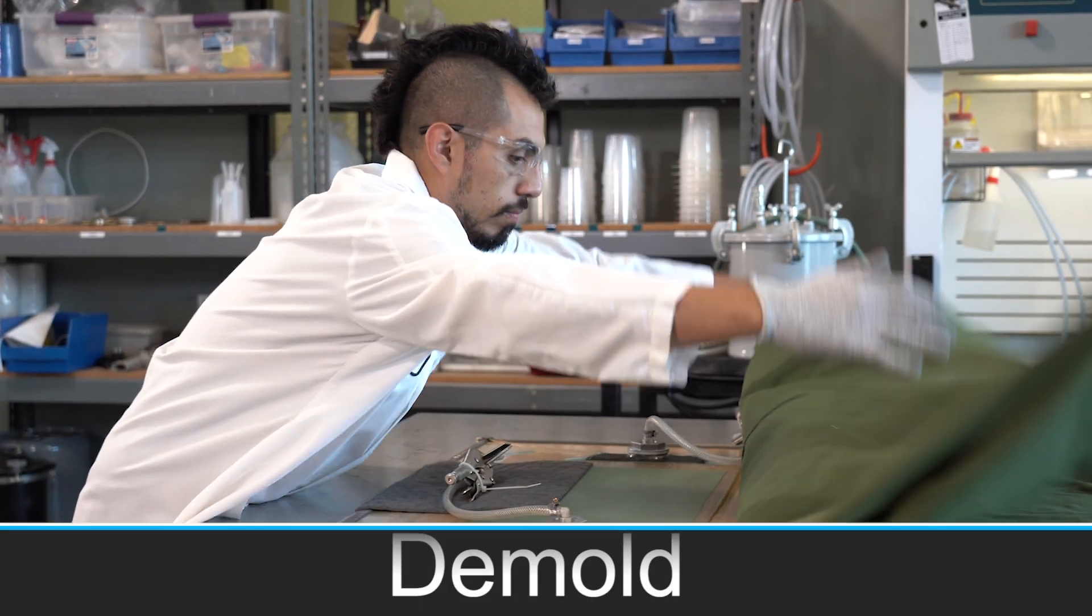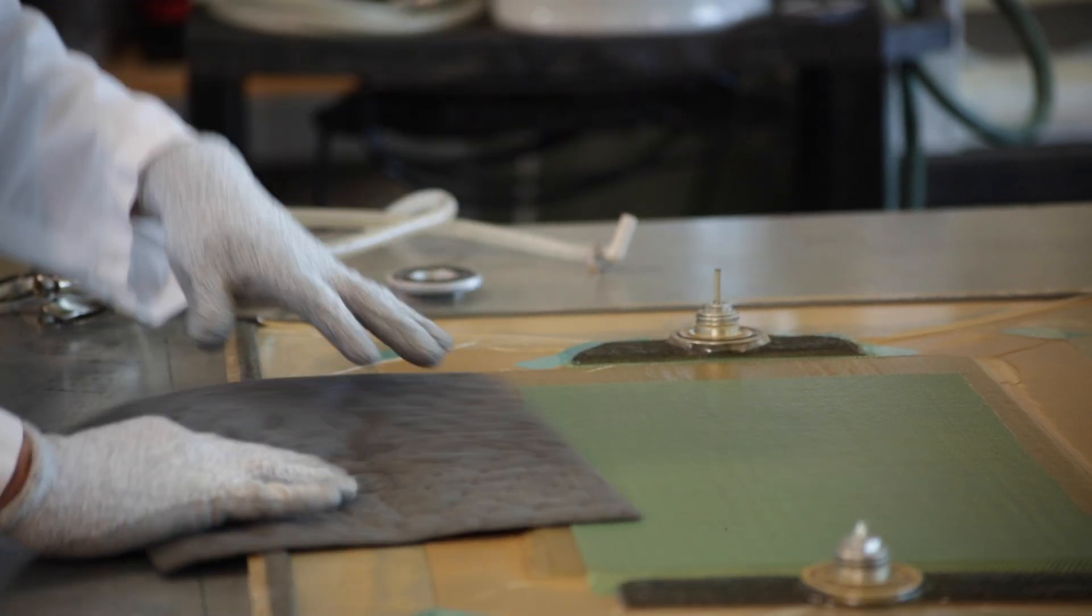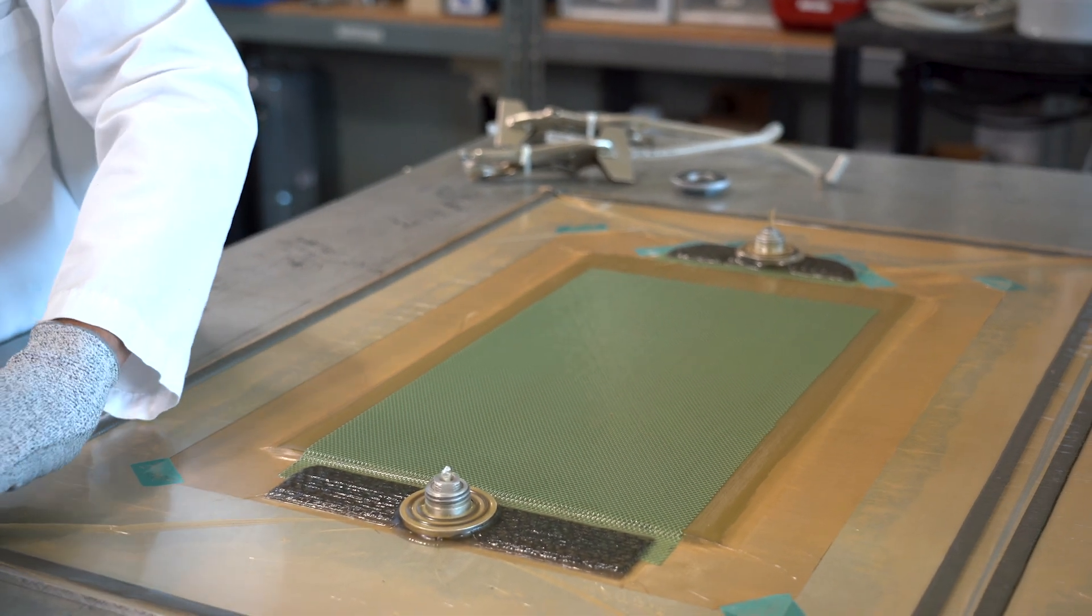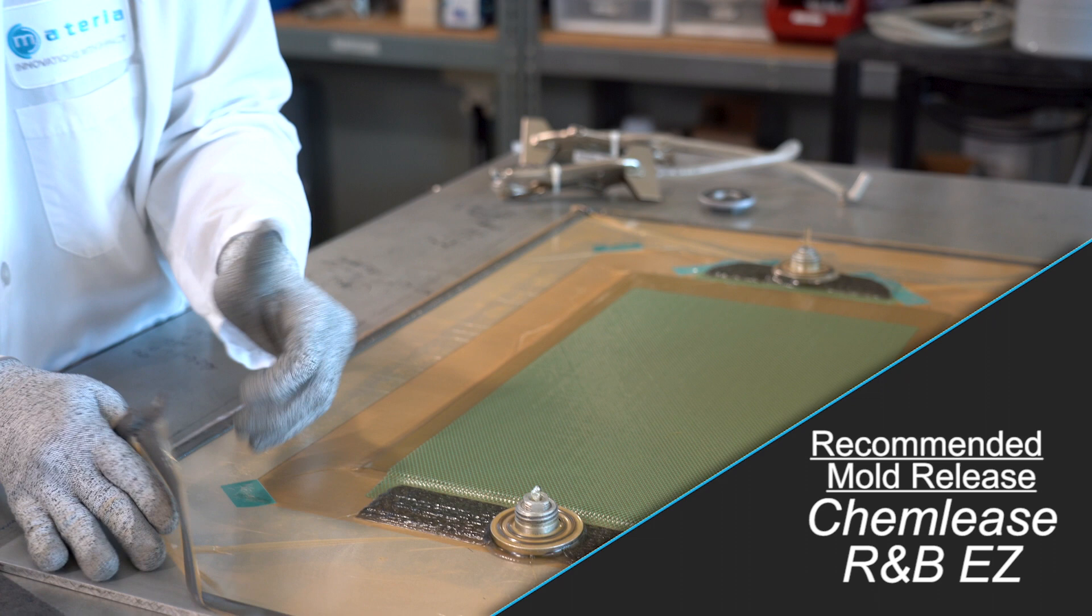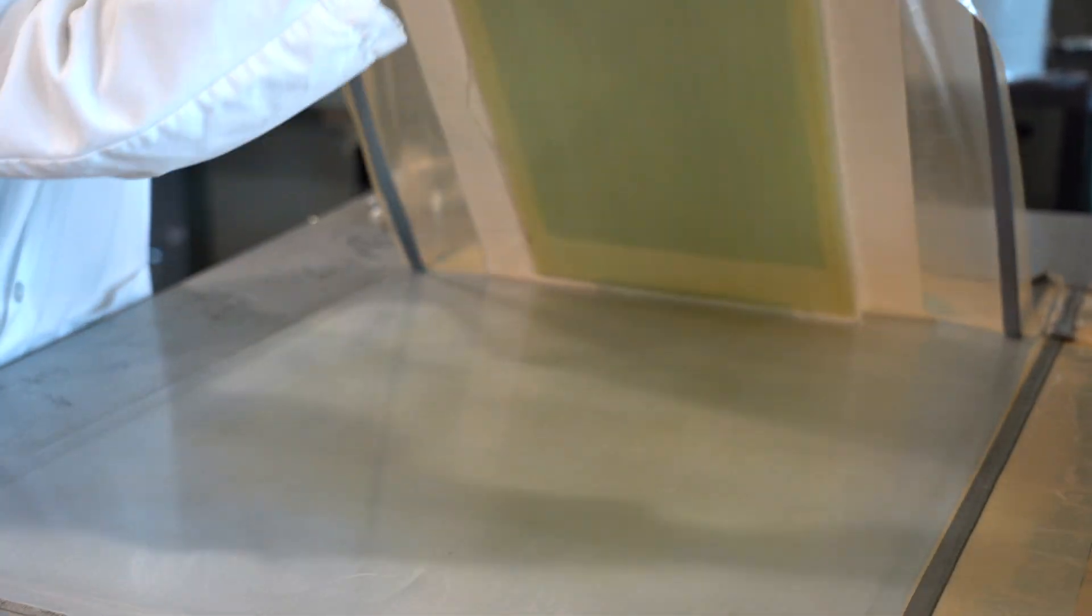After your 120C or 250F cure, your part is safe to demold with full properties. We use Kemlease RMB Easy to release our molds to prevent any adhesion to your mold surface.